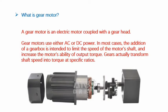What is a gear motor? A gear motor is an electric motor coupled with a gear head. Gear motors use either AC or DC power. In most cases, the addition of a gearbox is intended to limit the speed of the motor's shaft and increase the motor's output torque. Gears actually transform shaft speed into torque at specific ratios.